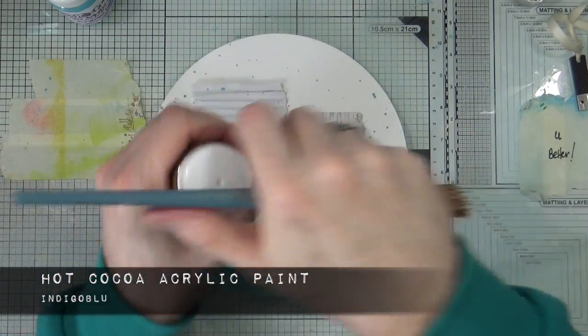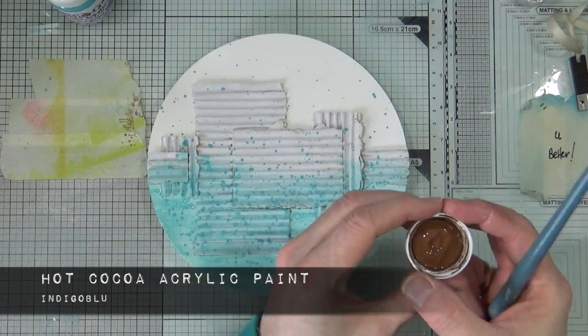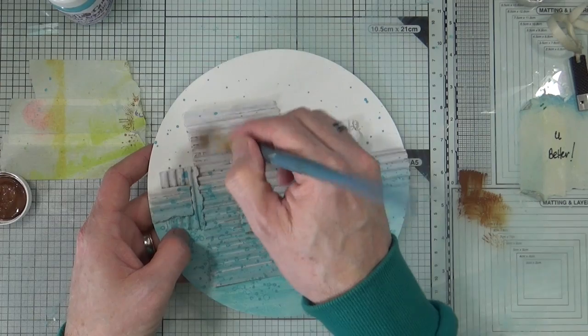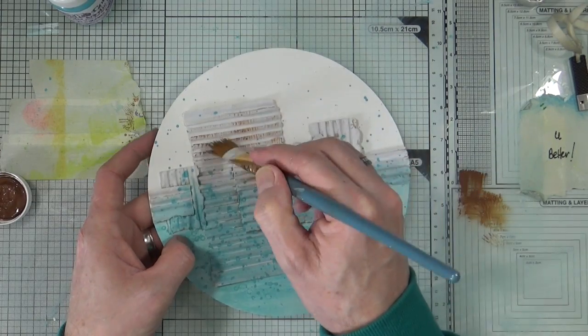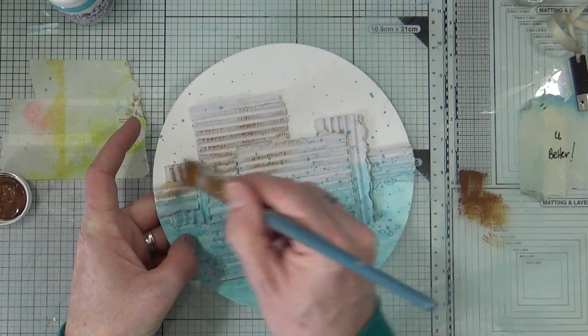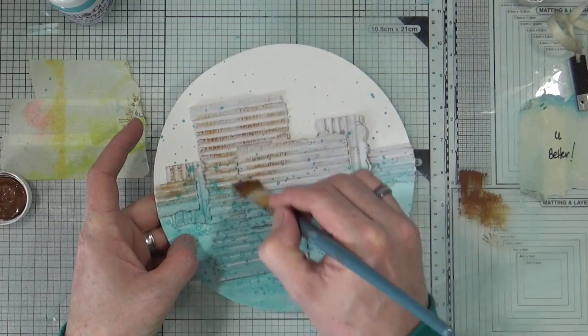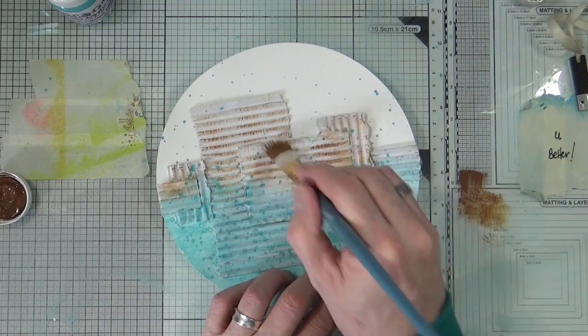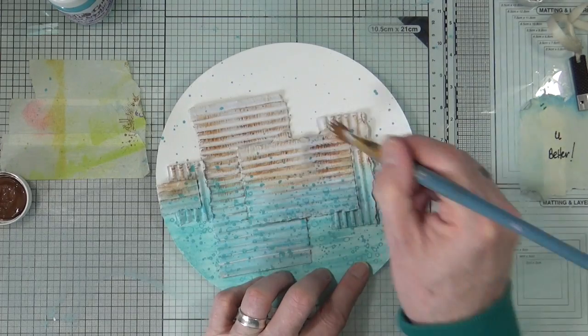Next up I'm using the Hot Cocoa acrylic paint, again from Indigo Blu, and using a dry brush method. Just put a little bit on my craft mat and I'm just going to dry brush it across the tops of the ridges on the corrugated cardboard, but only towards the top half of the page. Maybe bringing a little bit into the bottom part but not a lot.